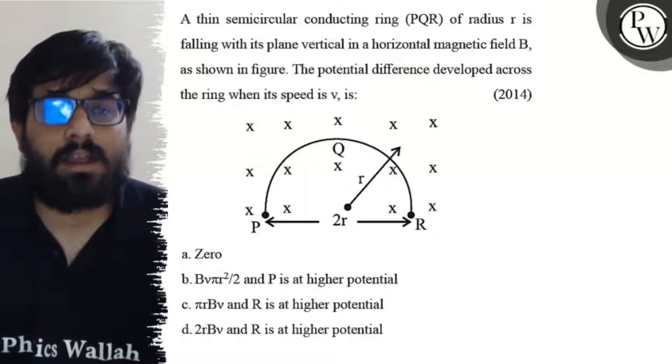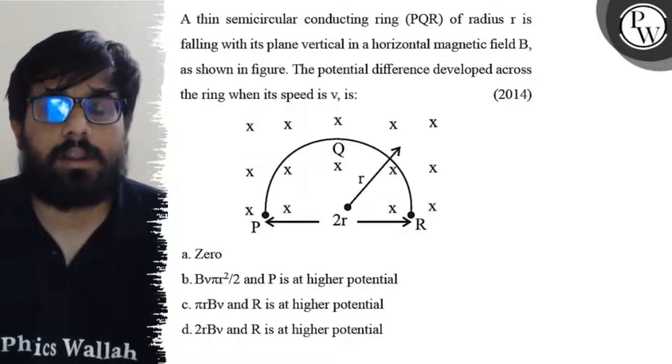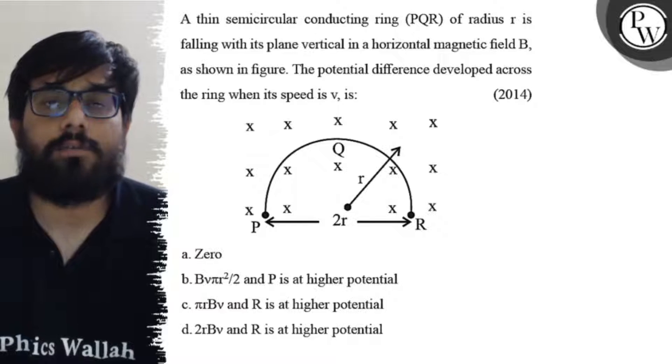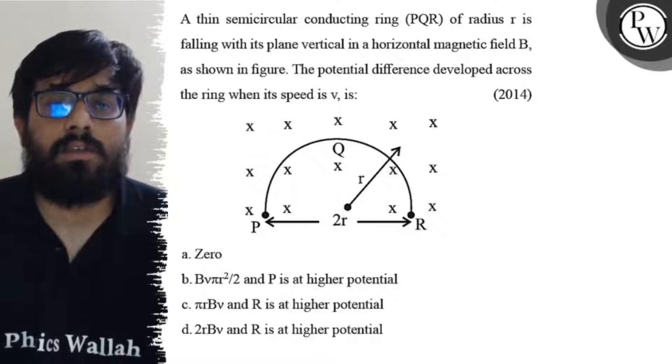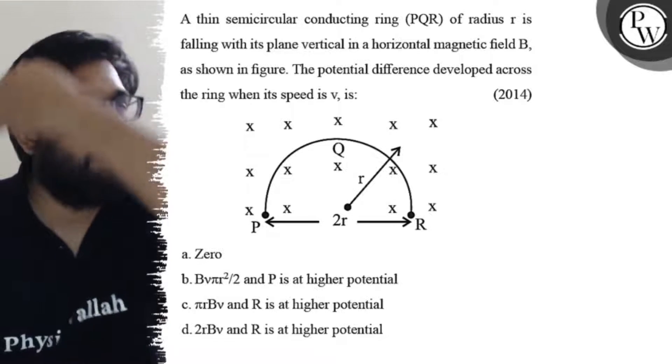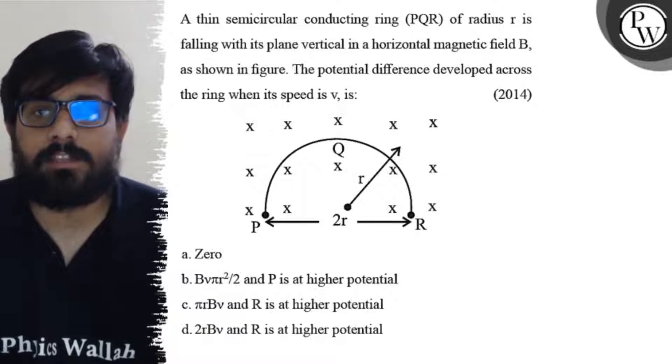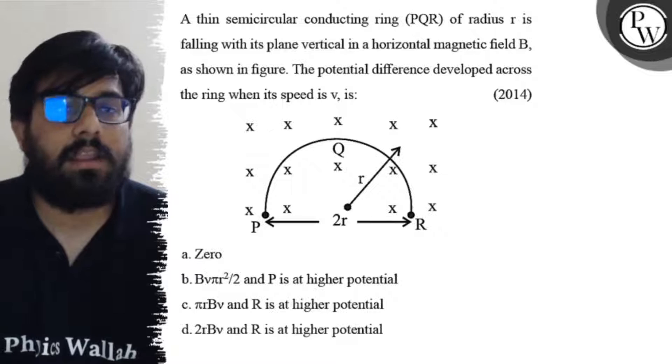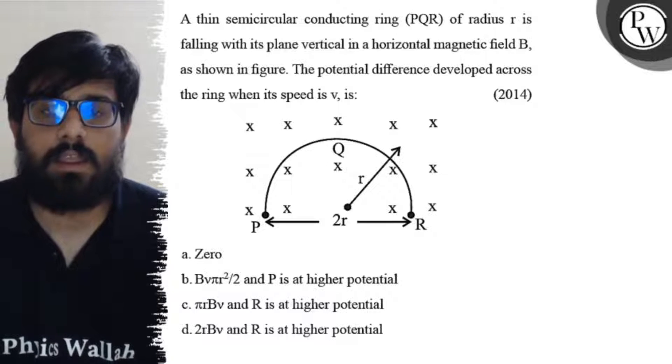Hello, let's see the question. A thin semicircular conducting ring PQR of radius r is falling with its plane vertical in a horizontal magnetic field, as shown in the figure. The potential difference developed across the ring when its speed is V is: